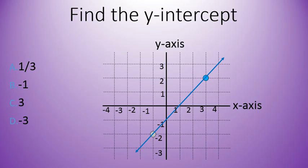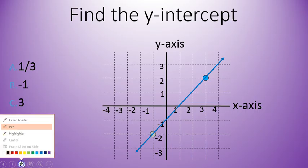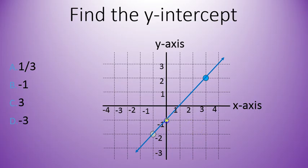Another one — finding the y-intercept. Pause the video and try to find the y-intercept for this line. Y-intercept should be pretty quick. It's the point where the line crosses the y-axis — that one is negative 1. Y-intercept is negative 1.